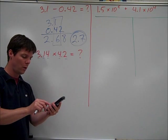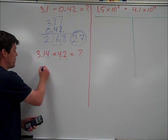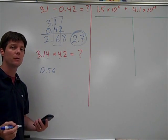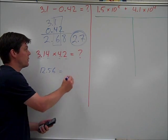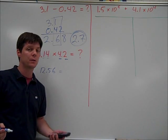I've got 3.14 multiplying by 4.2 and I find an answer of 12.56. That's what the calculator tells me, but I need to round this off to the correct number of sig figs. The correct number of sig figs will be two based on 4.2 having two sig figs.